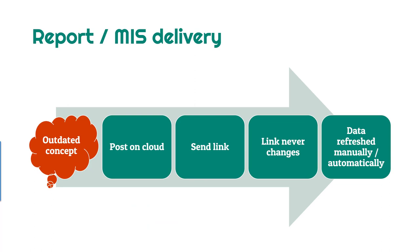Once we have a report or a dashboard, how to disseminate it is also inefficient. The outdated way is to send it by email, and that should be avoided at all costs — not only does it consume space and bandwidth, but every month we are sending more and more copies and confusing each other. Ideally, we should post the report or file on the cloud and send the link once and for all. Next month or next period onwards, the data changes but the link does not, and the data can be refreshed either manually or automatically. This is the practical implementation of a single version of truth, which we still have not fully achieved despite BI as a concept being there for two decades.